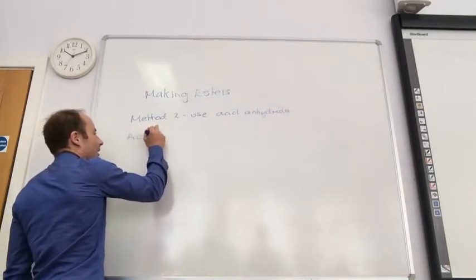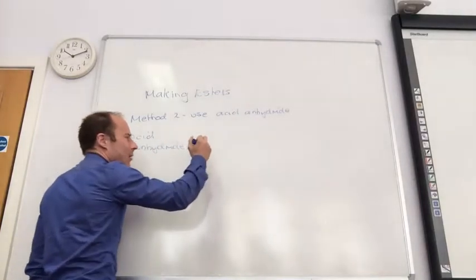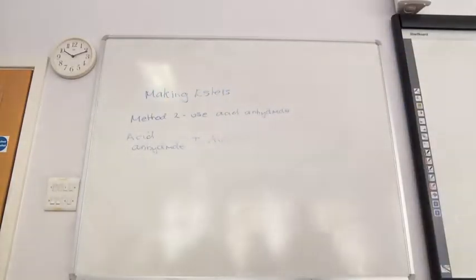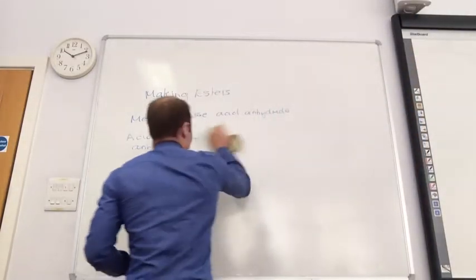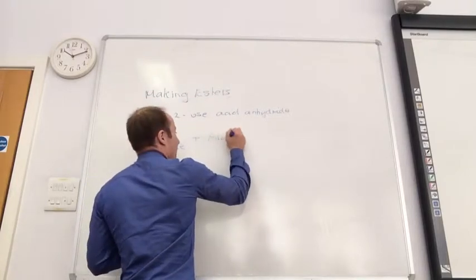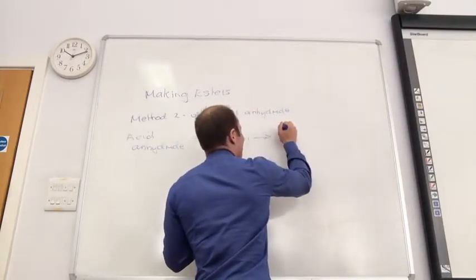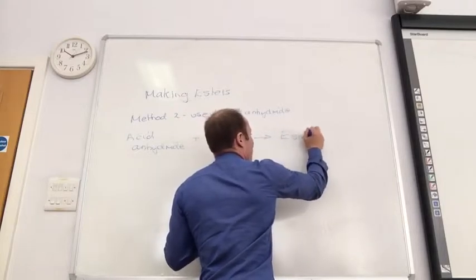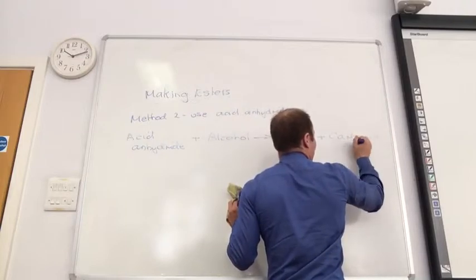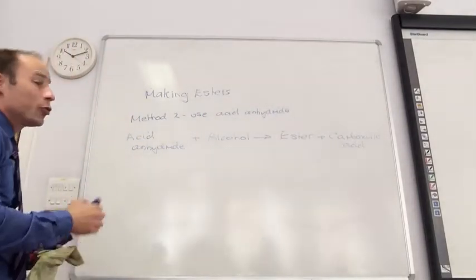So the equation goes now: acid anhydride plus an alcohol. My alcohol remains the same. Plus my alcohol is now going to give me, and look, no equilibrium arrow. We're excited. It's going to give me my ester plus a carboxylic acid. So we're using acid anhydride plus alcohol.